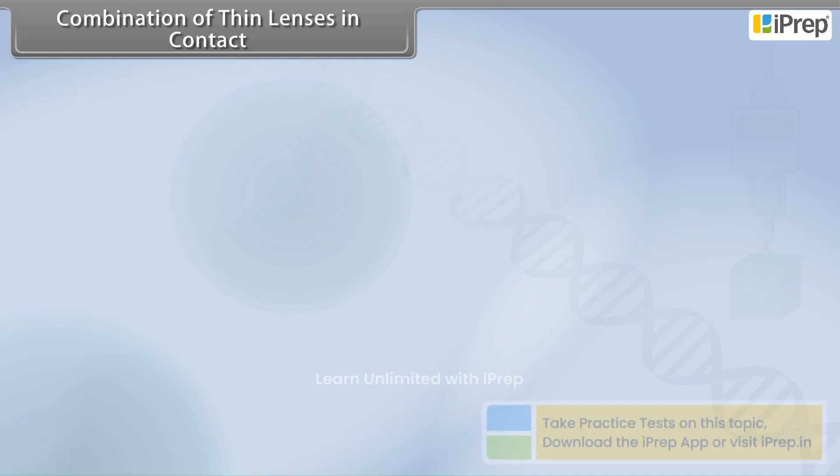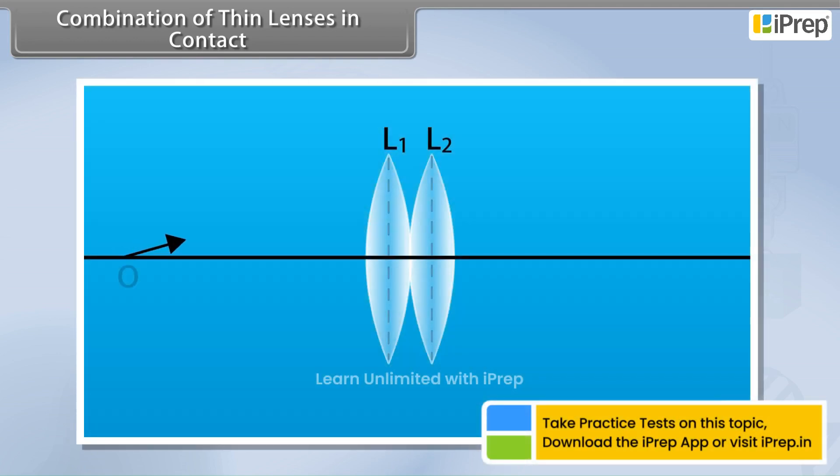Combination of thin lenses in contact. Suppose two thin convex lenses L1 and L2 are placed in contact in such a way that they have the same common axis.